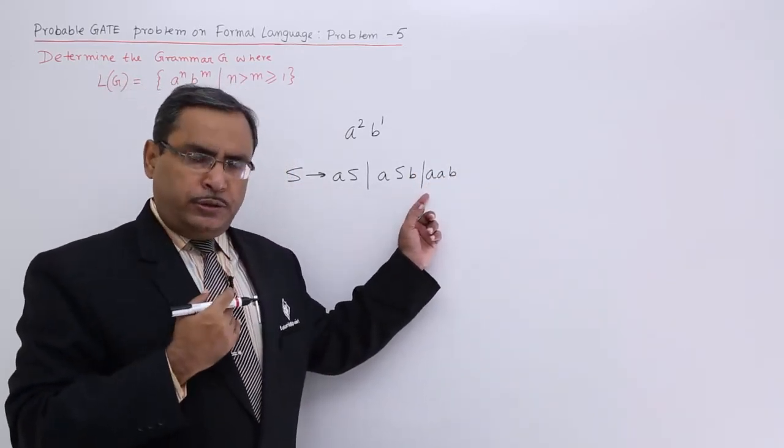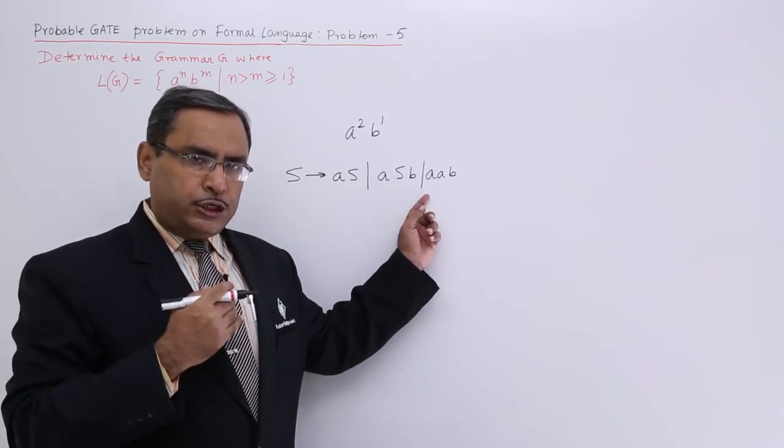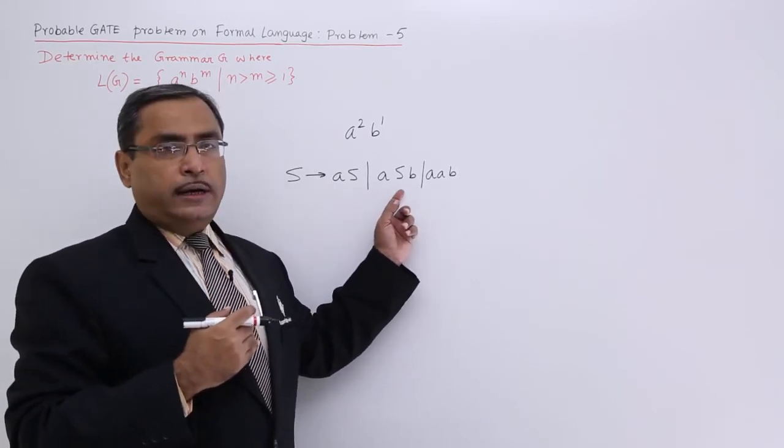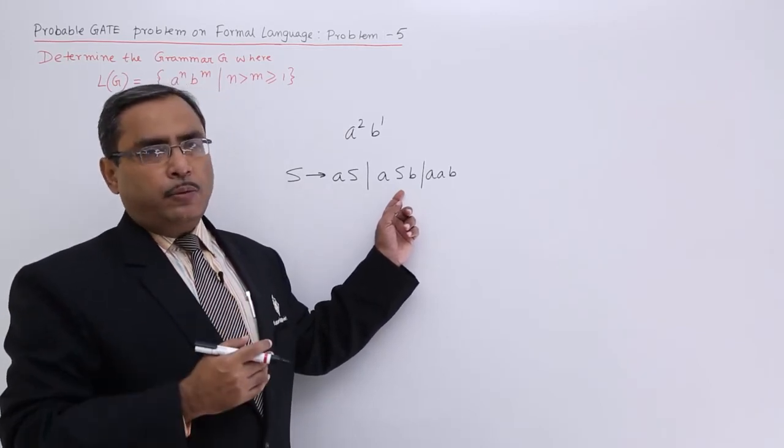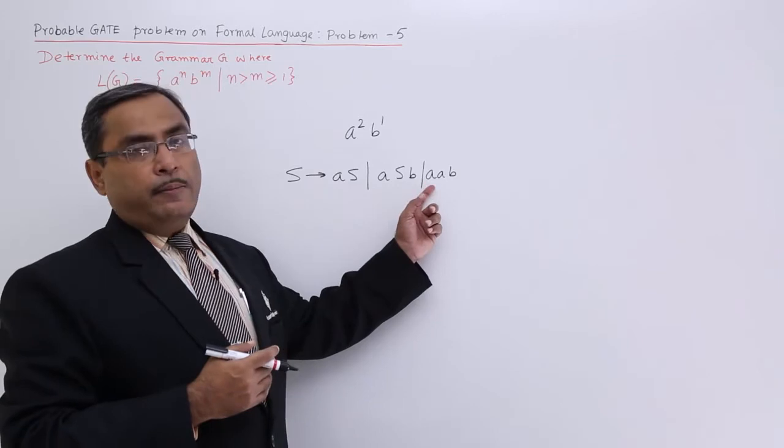Thus I have ensured that this particular grammar will always produce higher number of a's than number of b's. That is the grammar production rules.